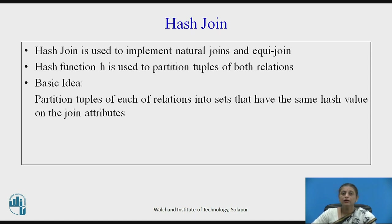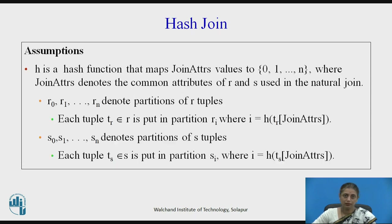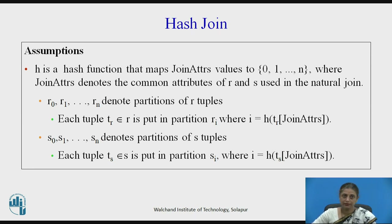This will avoid the comparison of every tuple with every other tuple. Here, h is a hash function that maps the join attributes to any one value from 0 to n, where joining attributes denote the common attributes between r and s which are used in the natural join.